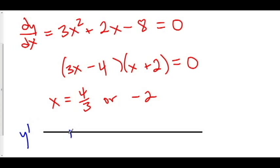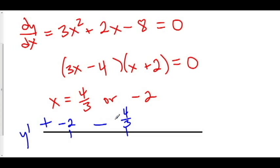We'll do our line analysis on y prime by graphing negative 2 and 4/3. To the left of negative 2, let's try negative 5: (3 times negative 5 minus 4) is negative, and (negative 5 plus 2) is negative — negative times negative is positive. So y prime is positive to the left of negative 2. In between negative 2 and 4/3, let's try 0: (0 minus 4) is negative, (0 plus 2) is positive — negative times positive is negative. To the right of 4/3, let's try 5: positive times positive, so y prime is positive there.